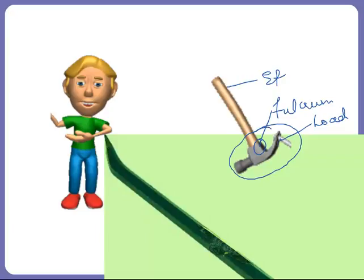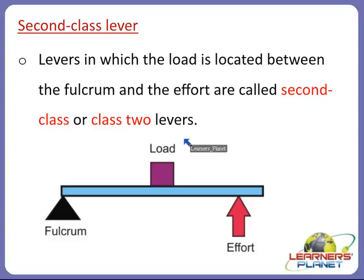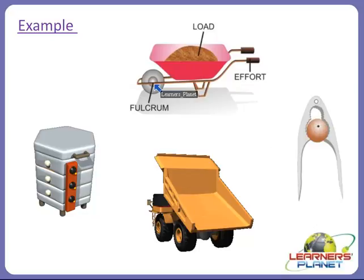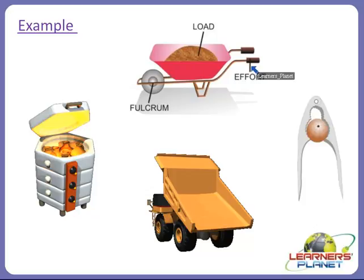That was all about first class lever. Now we are going to study about the second class lever. Levers in which the load is located between the fulcrum and the effort are called second class or class 2 levers. This is a wheelbarrow — at the end there is a fixed point acting as the fulcrum, the load is in between, and effort is applied at the other end. So this is a second class lever because the load is between the fulcrum and the effort.